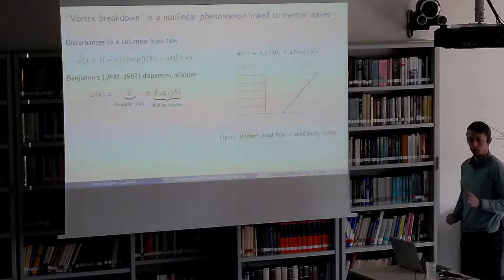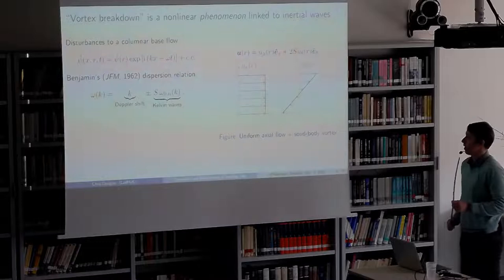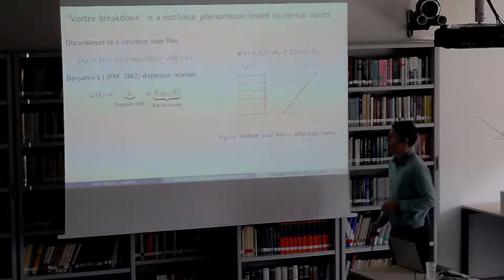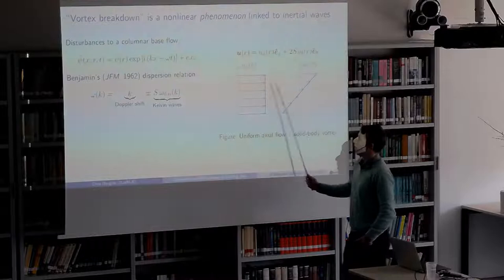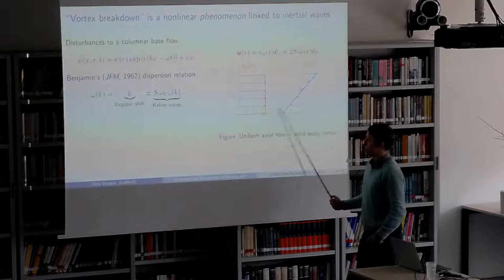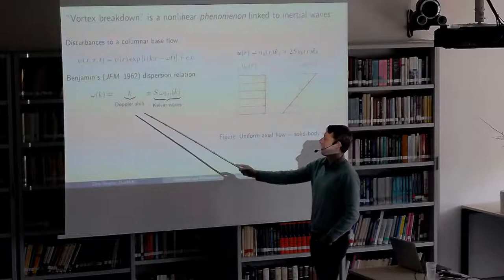Vortex breakdown is kind of a confusing thing in the literature if you jump in without a background, because it can refer both to a physical manifestation you see and to a phenomenon, and it's important to draw a distinction between those two. In my talk I'm referring to it as a phenomenon. The most basic way to think about vortex breakdown is to consider an inviscid flow in a rotating pipe and think about disturbances of a given form — if you plug these into the governing equations you can derive a dispersion relationship governing how waves propagate in the system.